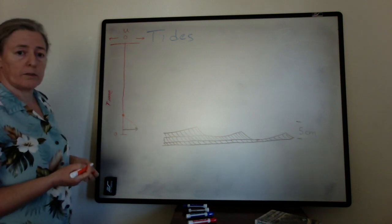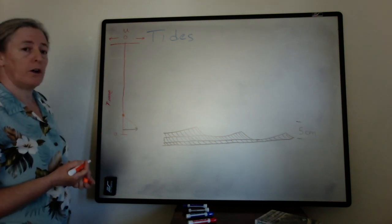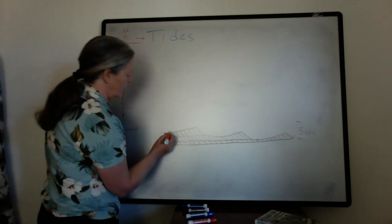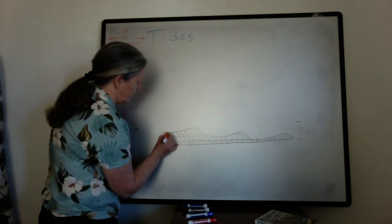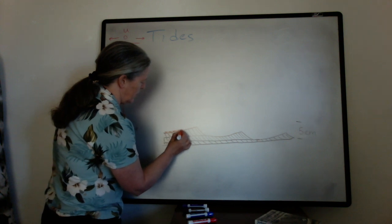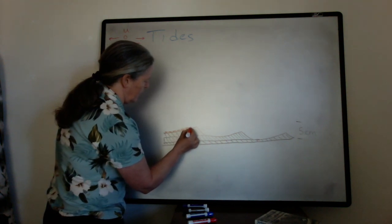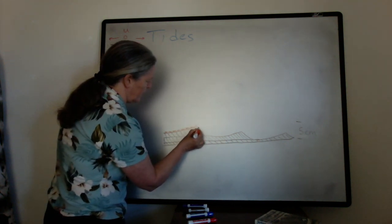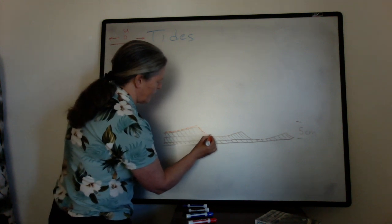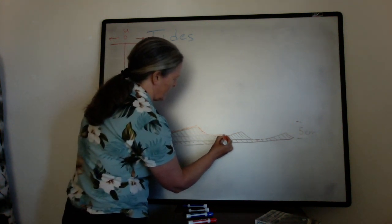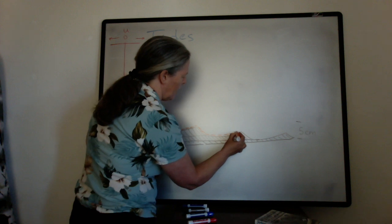If we think about the Hjulström diagram, when the flow is very low you can accumulate mud. So I'm going to draw some mud that accumulates across the top of this ripple.